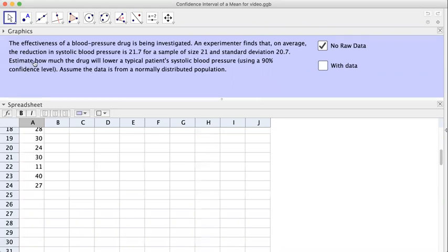Estimate how much the drug will lower the typical patient's systolic blood pressure using 90 percent confidence level, assuming that the data is from a normal distributed population.